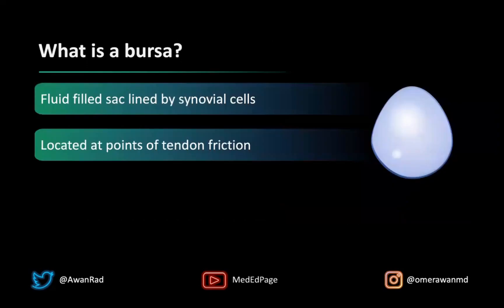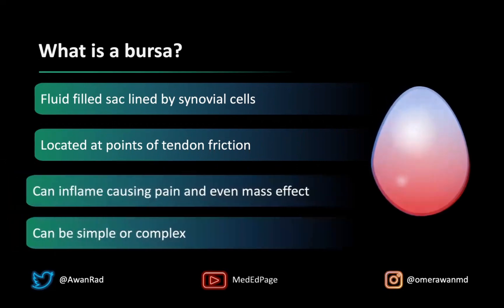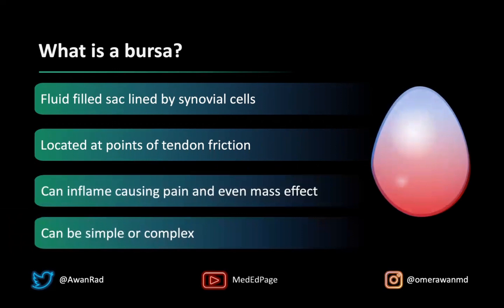What is a bursa? A bursa is simply a fluid-filled sac lined by synovial cells, located at points of tendon friction. They don't always exist, but when there's tendon friction or a lot of pressure on a tendon, a potential space can form. It's important because they can be painful, they can get inflamed, and they can even result in mass effect on surrounding structures.